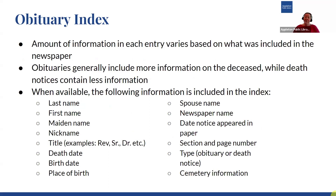The amount of information in each entry is going to vary depending on what was included in the actual newspaper. Obituaries generally are going to include a lot more information on the person who died, while death notices are going to have a lot less. When available, the following information is included in the index: last name, first name, maiden name, nickname, a title like doctor or reverend, a death date, a birth date, place of birth, and spouse name — including if they had more than one spouse during their life, you'd have multiple spouses listed if they were included in the newspaper.